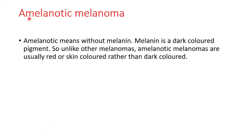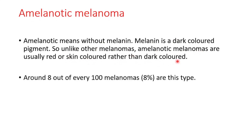Lastly, we will talk about amelanotic melanoma. Amelanotic means without melanin. Melanin is a dark-colored pigment, so unlike other melanomas, amelanotic melanomas are usually red or skin-colored rather than dark. Around 8 out of every 100 melanomas are this type.